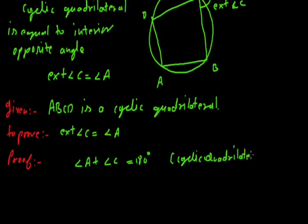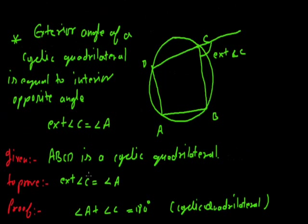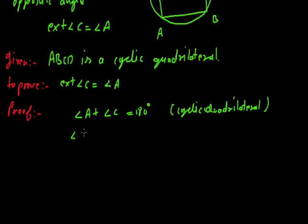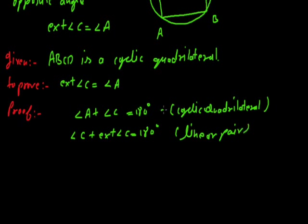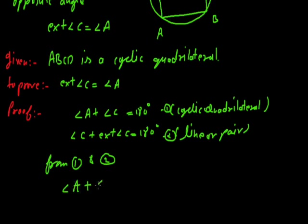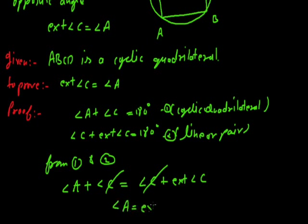From these two equations, since their right-hand sides are both equal to 180 degrees, we can equate their left-hand sides. So angle A plus angle C equals angle C plus exterior angle C. Cancelling angle C from both sides, we get angle A equals exterior angle C. That is what we had to prove — the exterior angle of a cyclic quadrilateral equals the interior opposite angle. In the same way we can prove this for the other angles also.